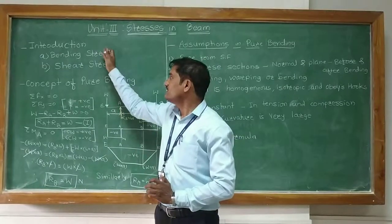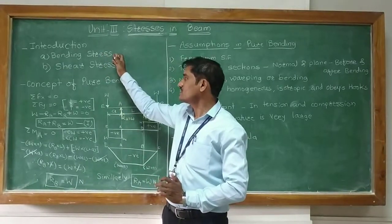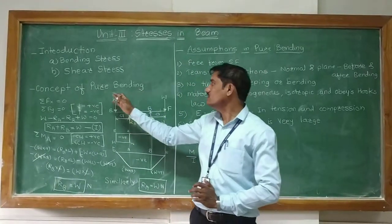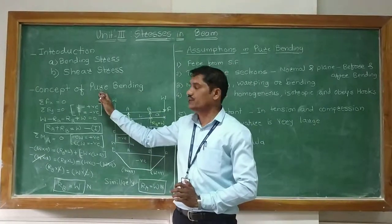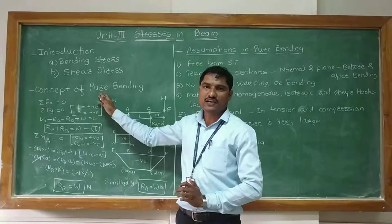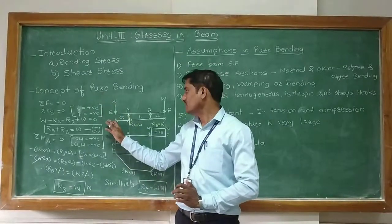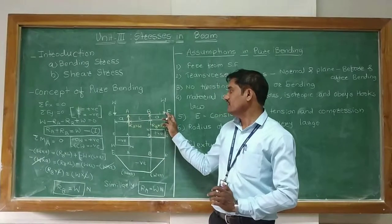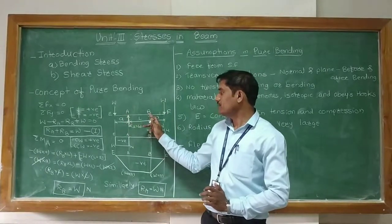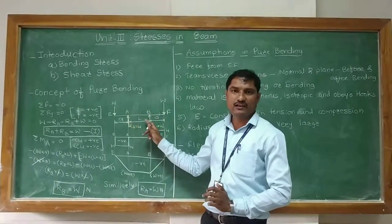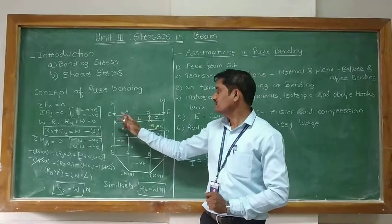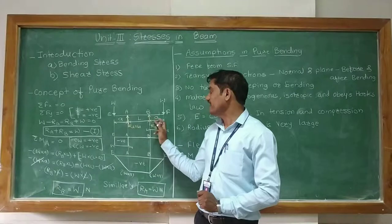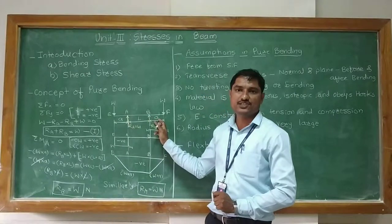Now in this part we will first see the concept of pure bending. To understand how bending occurs, let us consider a beam EABF in which the part AB of the beam has length L, and the parts EA and BF are overhanging portions of distance A.